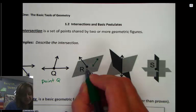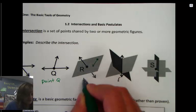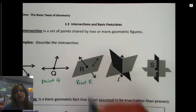That intersection is a point, and in this case they've named it point R. So the plane and the line both share point R.